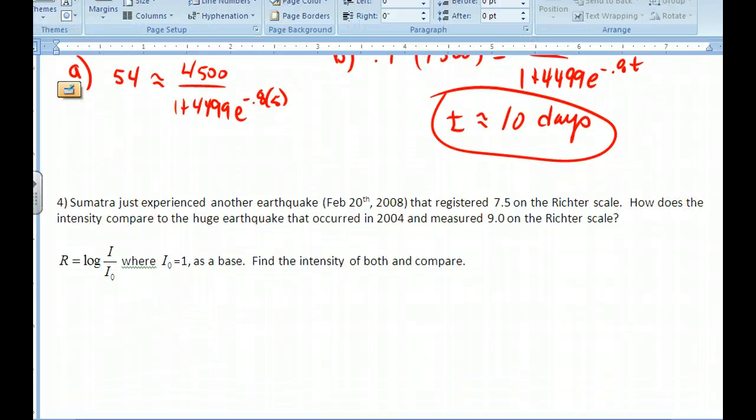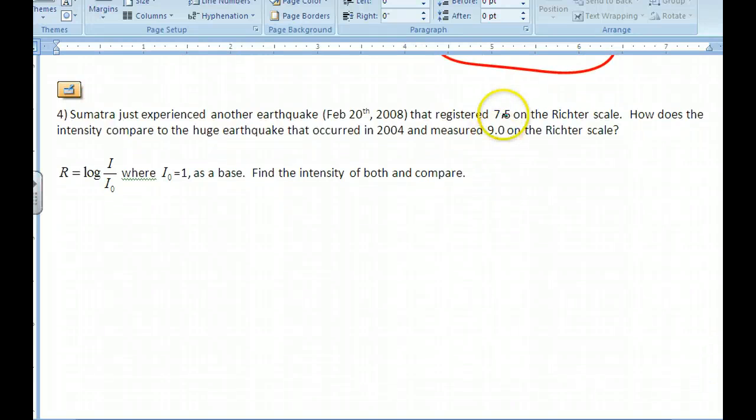This last example deals with the Richter scale. And the Richter scale is purely based on logarithms. So when you see this 7.5 and this 9, you can read this, by the way, 7.5, that would be an exponent. And 9 would be an exponent. And so they are logarithms. And so if you look at this, the Richter scale reading is equal to the log of the intensity divided by some initial value. And in this case, we're going to use I0 as 1. Find the intensity of both and compare. So if I do this, R is equal to the log of I. And if I do this for the first one, 7.5, 7.5 is going to be equal to the log of I. This is base 10, so this is simply 10 to the 7.5 is equal to I. And in a similar fashion, I can do the exact same thing with the 9. The intensity for that one would be 10 to the 9th.